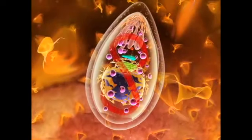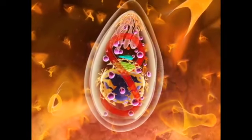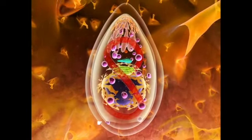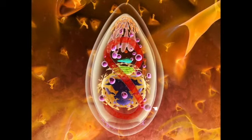Inside the vacuole, dense granules start to secrete its contents, which will give origin to a tubular network and, furthermore, contribute to the growth of the vacuole, as the tachyzoites replicate by endodiogeny.